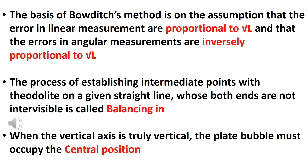The basis of the Bowditch method is on the assumption that the error in linear measurements is proportional to the square root of the length, and that the error in angular measurements is inversely proportional to the square root.